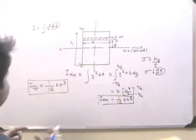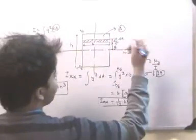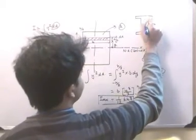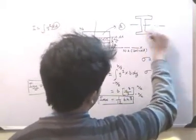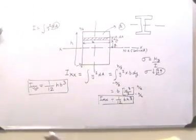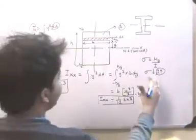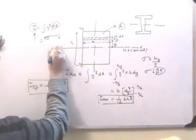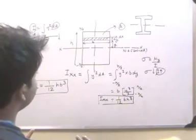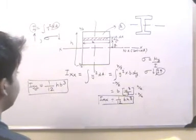So essentially, if we have the same area A in a rectangular cross section, and we compare it with some kind of an I-section which is also of area A — with its neutral axis at the centroid since it is symmetrical — putting the area as far apart from the neutral axis as possible increases the value of I. And if we increase this value of I, automatically the bending stress decreases, meaning the section can take in more load with less bending stress — so it can handle bending better.